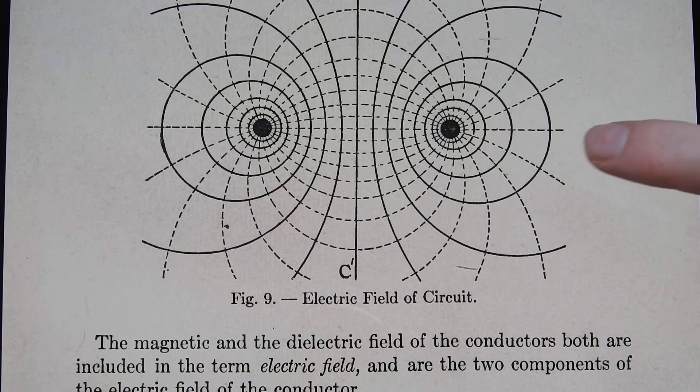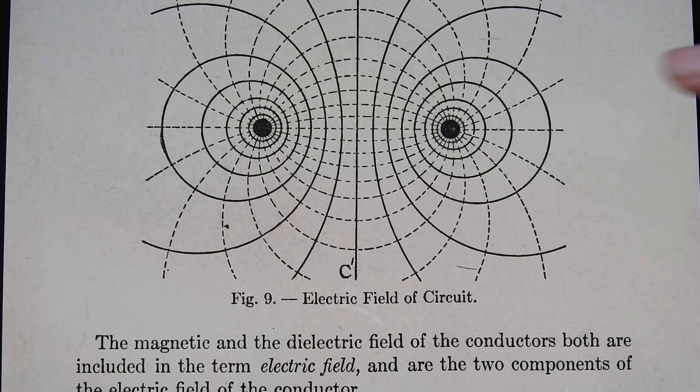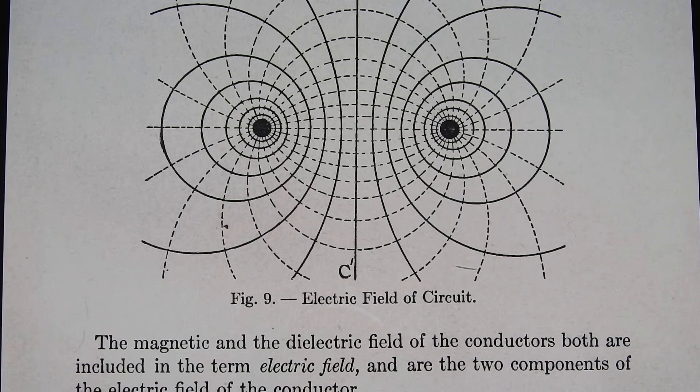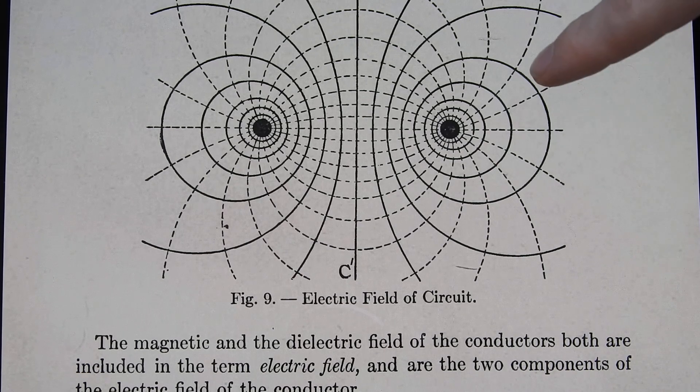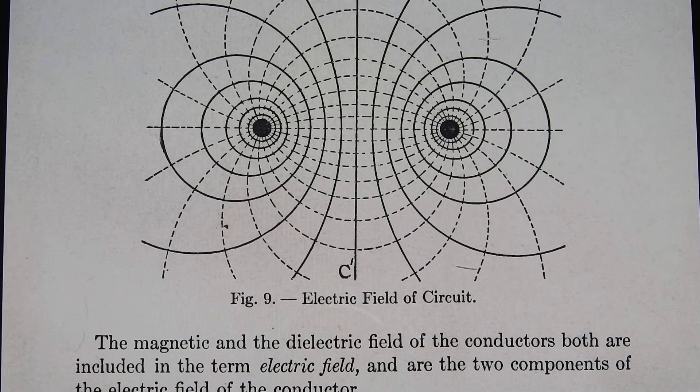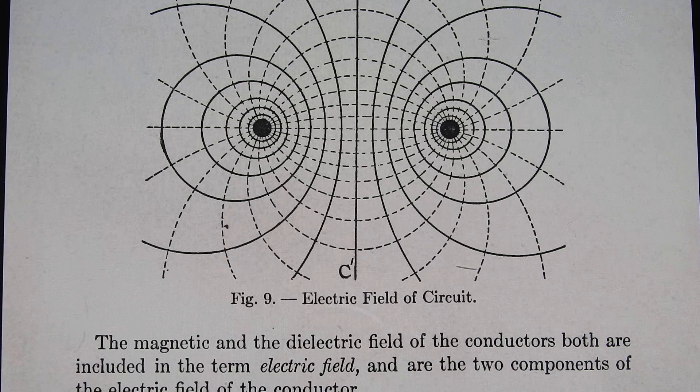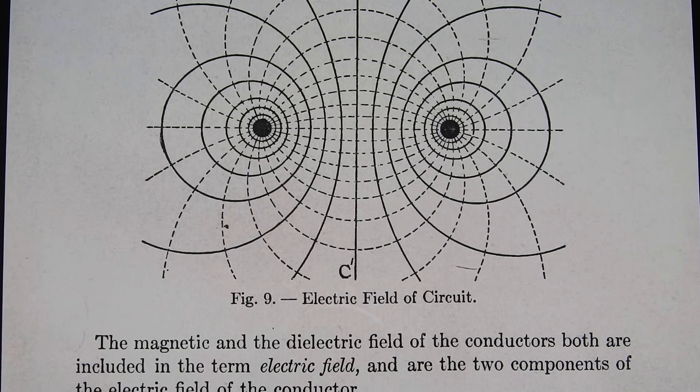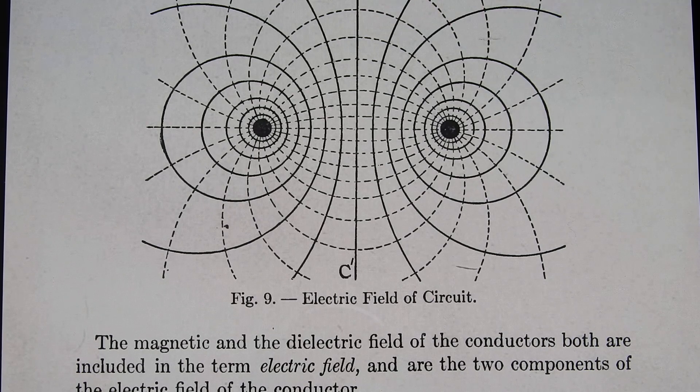What you see here is a diagram of the electric field of a circuit, and I show you this to give you the idea of what electricity is. Electricity is basically the electric field itself, meaning that the magnetic and dielectric energy are stored in the magnetic and dielectric field.